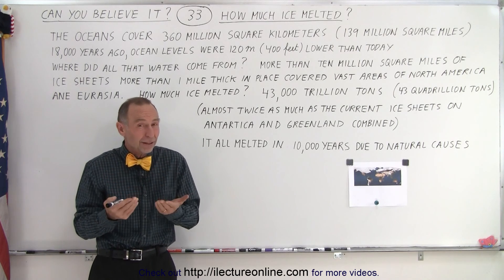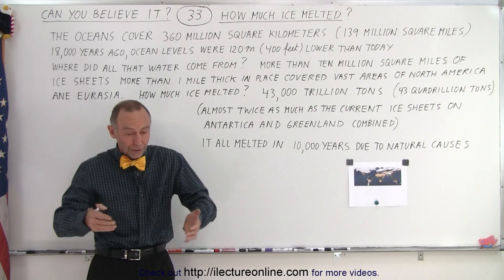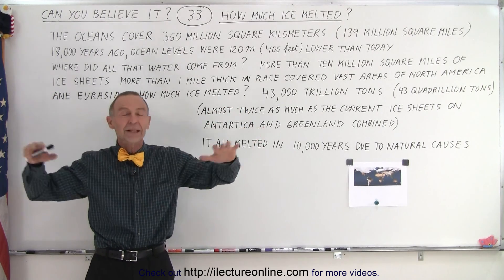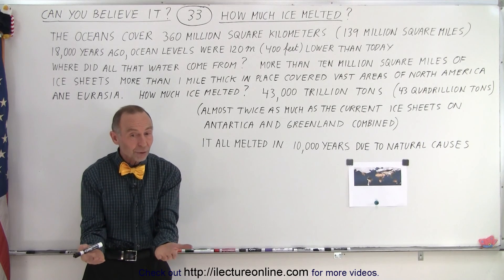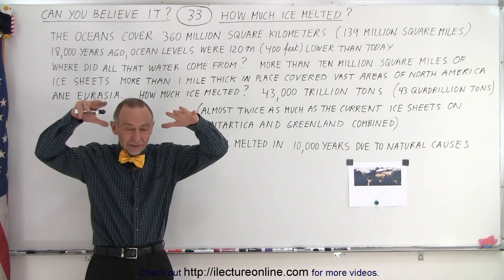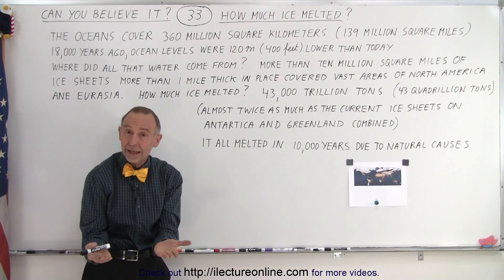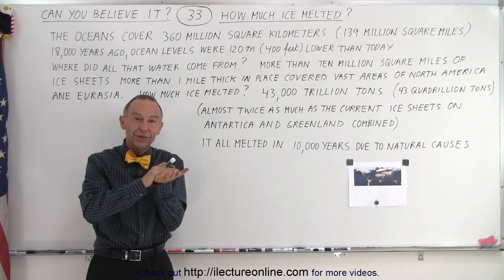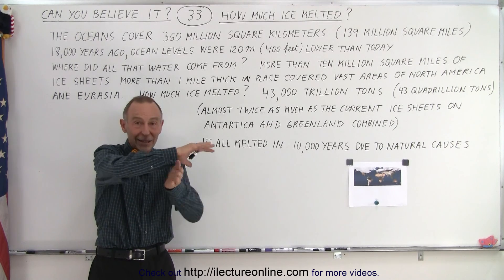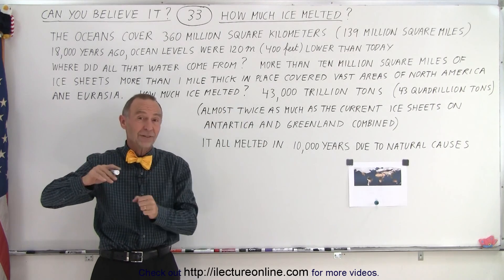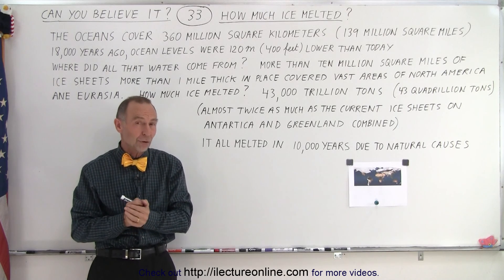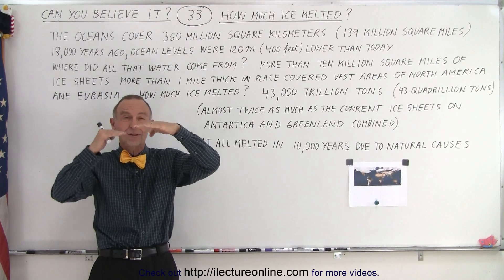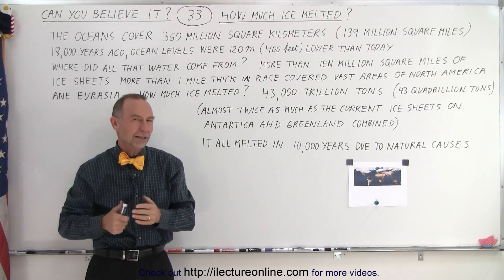Those ice sheets have since melted, and believe it or not, the land areas where these massive quantities of ice were covering the land are currently still rising up. The weight of all that ice had pushed down the land, and now the land is still rising. When we measure ocean levels against the land in northern areas such as northern Alaska and the Scandinavian countries, we actually see that ocean levels appear to be dropping relative to the land because the land is rising.